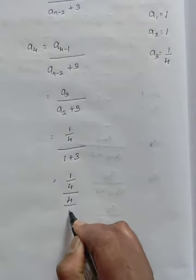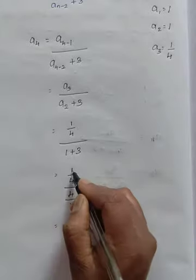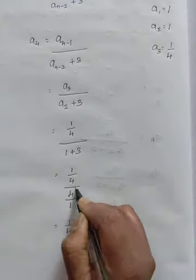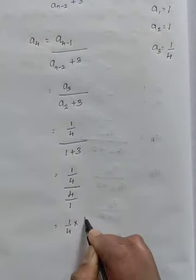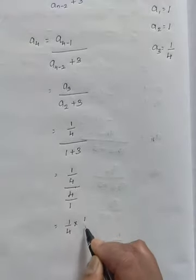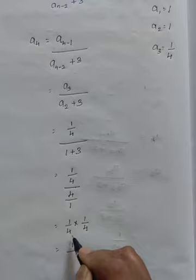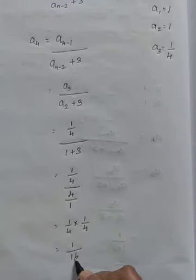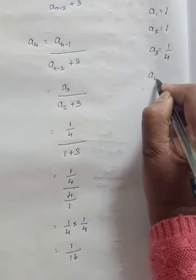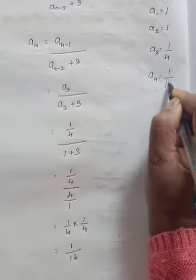4 means 4 by 1. So 1 by 4, division will become multiplication. The denominator will become reciprocal. 4 by 1 becomes 1 by 4. So that is 1 divided by 4, 4s are 16. Therefore A4 value is 1 by 16.